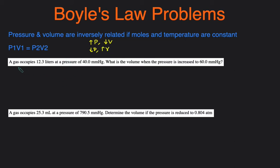Let's take a look at some examples. The first one says that a gas occupies 12.3 liters at a pressure, so we're given an initial volume. We'll call that V1. We're given an initial pressure P1 and it's asking us what's the new volume V2 when the pressure is increased to 60 millimeters mercury. We'll call that P2.